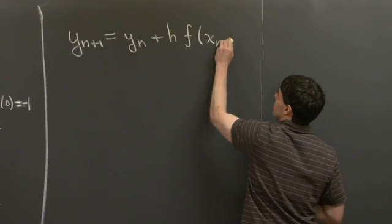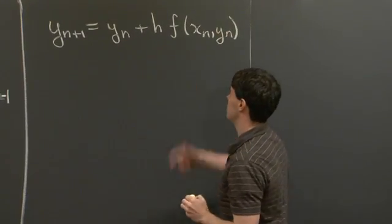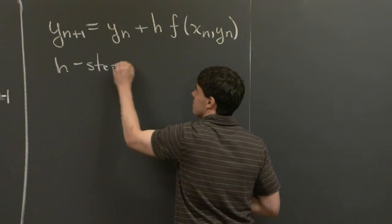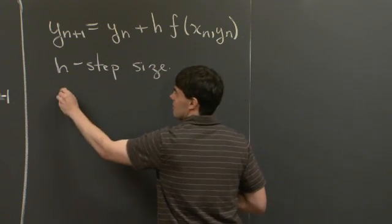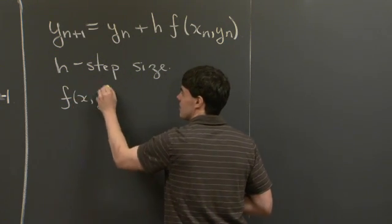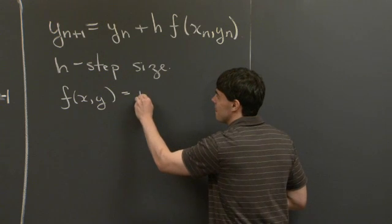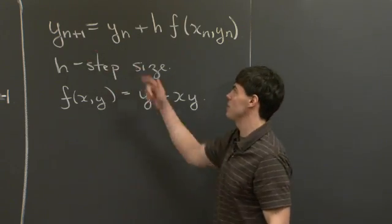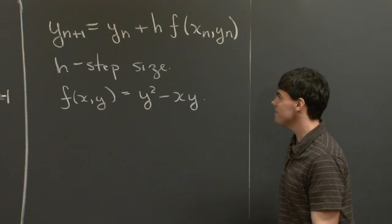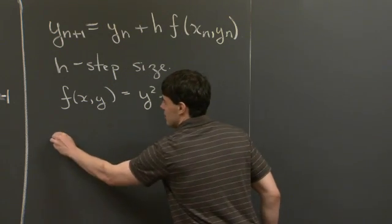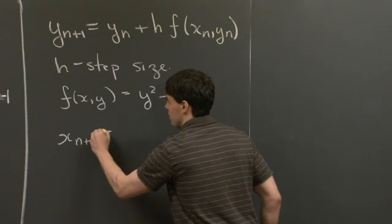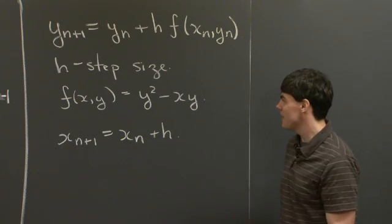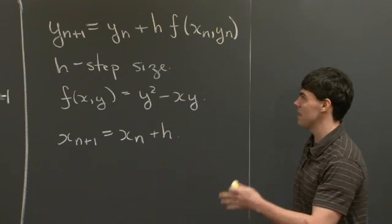then I can approximate the continuous ODE using this simple formula. So here, h, as I mentioned, is the step size. f, in this case, is the right-hand side of the ODE. And we see that (y_{n+1} - y_n)/h is an approximation to y'. In addition, we can also write down x_{n+1} = x_n + h. And I'm using subscripts n here just to denote the step of the algorithm.